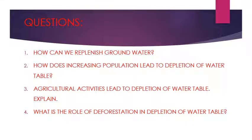Now let's move on to questions. Question number one: how can we replenish groundwater? Number two: how does increasing population lead to depletion of water table? Number three: how do agricultural activities lead to depletion of water table? Explain. And four: what is the role of deforestation in depletion of water table? Read these questions carefully and write your answers in your chemistry notes. Thank you, children.